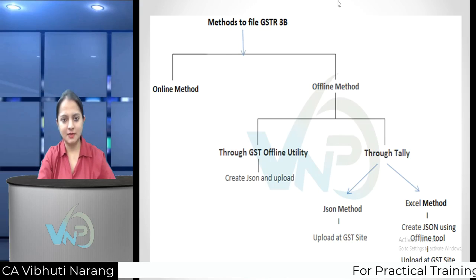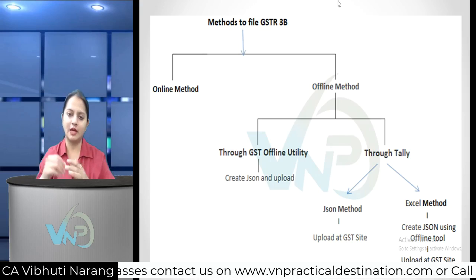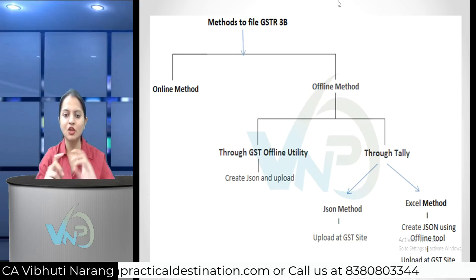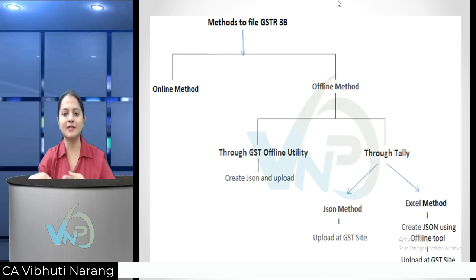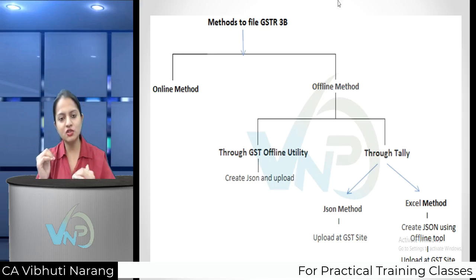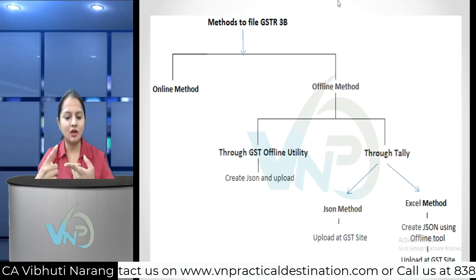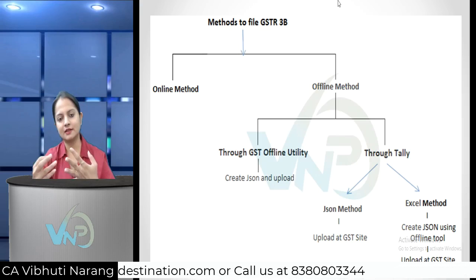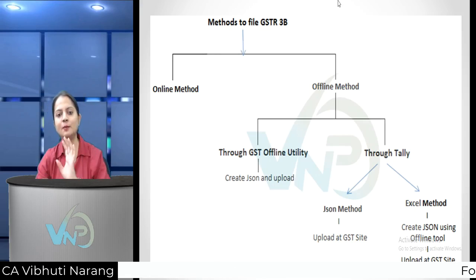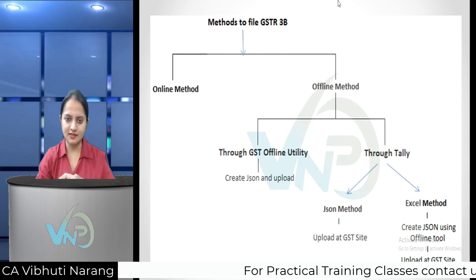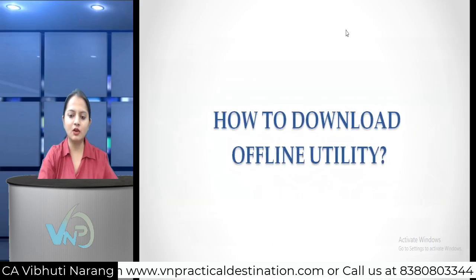The offline method may be of two or three types. The first is the offline utility for GSTR 3B. The second is Excel. And the third is JSON upload.